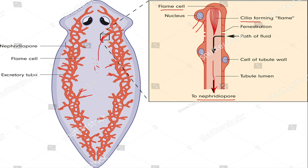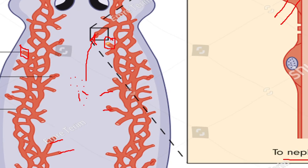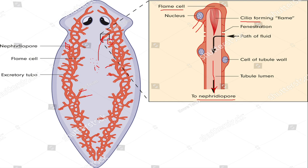You can see the nephridiopores here. The water enters the flame cells by the beating of cilia, and after filtering, the excess water and metabolic waste move out from the body of planaria through these small pores called nephridiopores. This is the function of the protonephridia, which plays an important role in excretion in planaria.